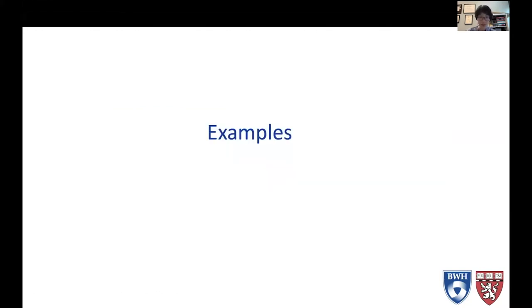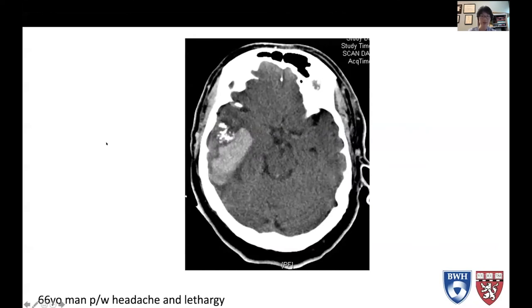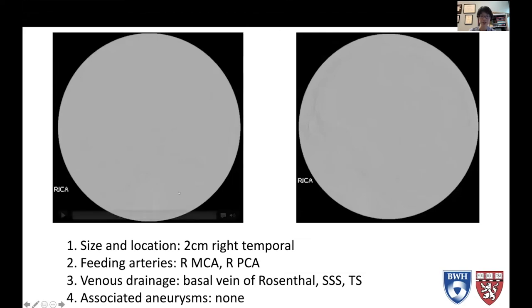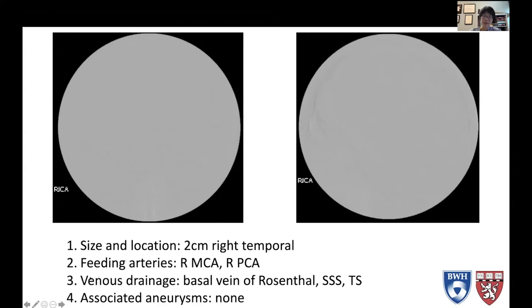Let's go through some examples of AVMs and how we describe them. This is a 66-year-old man who presented with headache and lethargy. You can see there's a hemorrhage in the temporal lobe. You can also see some calcifications here — AVMs are sometimes associated with calcifications. So how do we describe this AVM? First, size and location: this is a two centimeter right temporal AVM. To describe the vascular structure, you would need something like an angiogram.